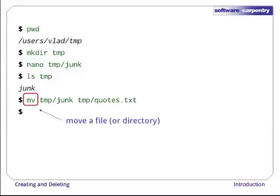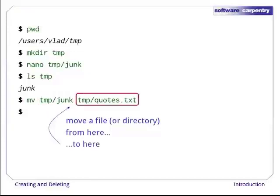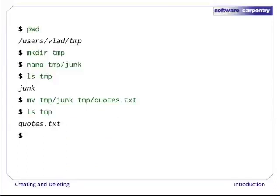The first argument tells mv what we're moving. The second tells it where the thing we're moving is to go. In this case, we're moving temp/junk to temp/quotes.txt, which has the same effect as renaming the file. Sure enough, ls shows us that temp now contains one file called quotes.txt.